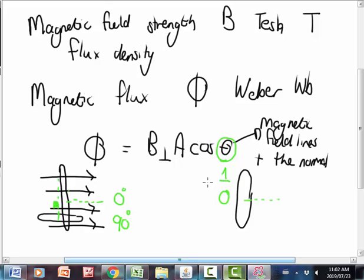So we see the larger the angle between the magnetic field lines and the normal, the smaller the magnetic flux. The smaller the angle between the magnetic field lines and the normal, the larger the magnetic flux.